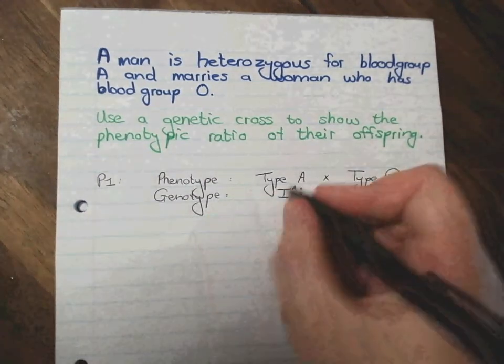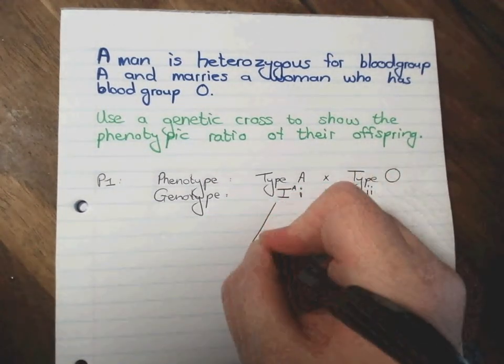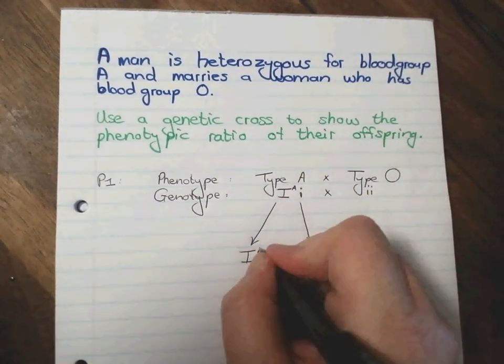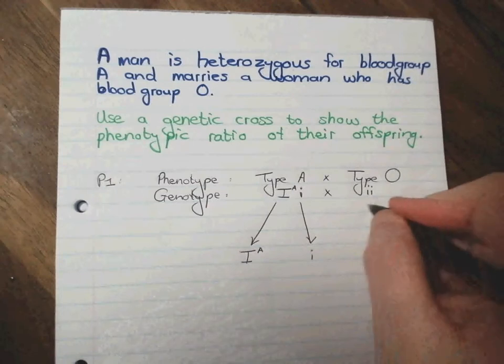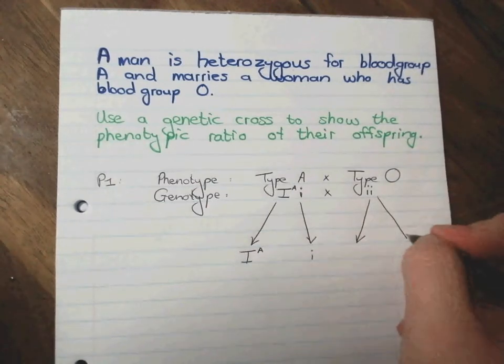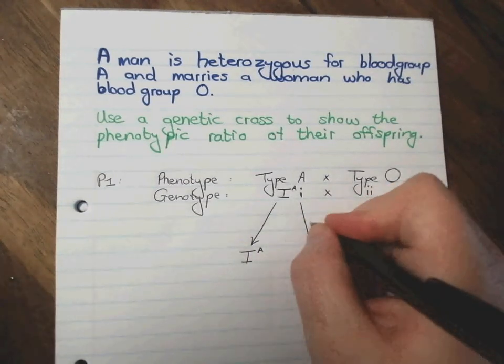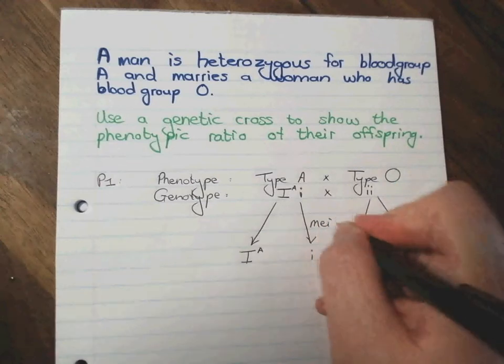Right, so now we have to have a look at what gametes are being produced. Now this one over here can produce two types of gametes, and this one over here can produce only one type of gamete, but we are writing down both of them in any case. And the process by which this is being done is, you guessed it, meiosis.